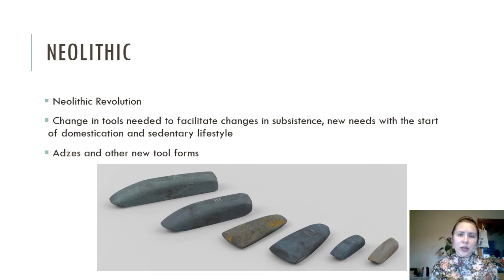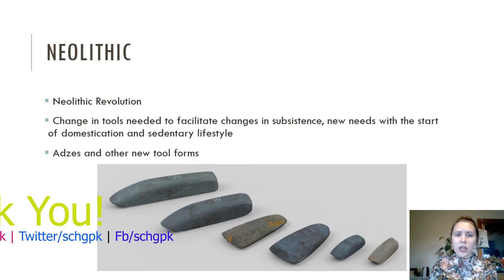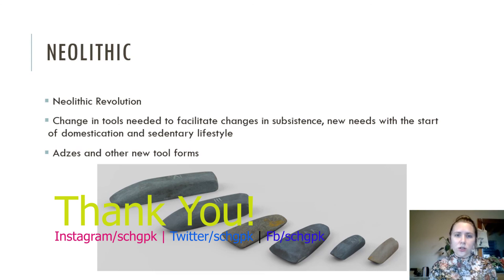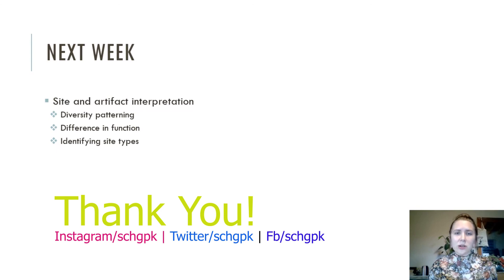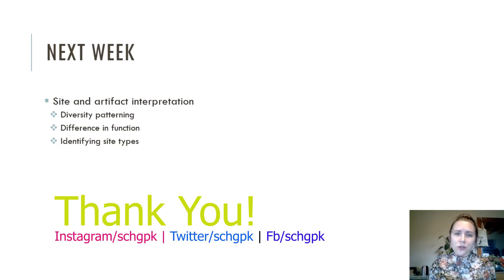Finally, we reach the Neolithic. This period is defined by a switch to sedentism and domestication as primary ways of life. Along with these drastic changes, we also see a change in the technological repertoire to reflect these lifestyle changes. While lithics from previous technological types are still present, such as microliths and finely worked bifaces, we also see the appearance of stone axes, which are used for large-scale plant processing and resource exploitation related to housing and farm development. And that's all for this week. I know it's been a very quick overview of the Paleolithic, Stone Age, and lithic record, but hopefully that gives you an idea of the development of lithic strategies through time. Next week, we'll be talking about site and artifact interpretation.